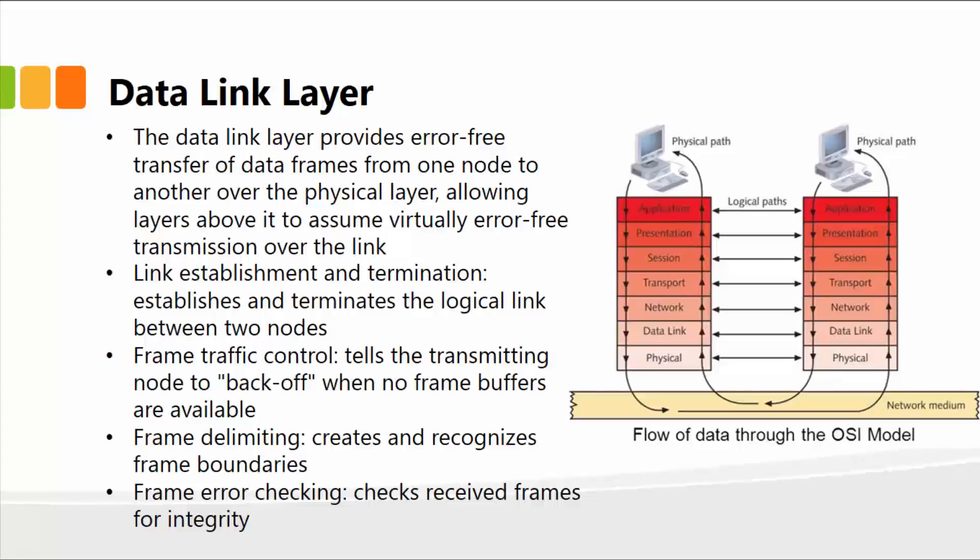The frame traffic control tells the transmitting node to stop or back off when no frame buffers are available. It also performs frame delimiting and creates and recognizes frame boundaries and error checking. So in a nutshell, the data link layer provides error-free transfer of data upwards to the application layer.